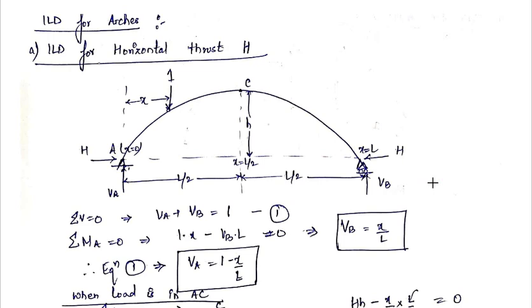In order to draw the ILD for the horizontal thrust, we first find out the values of the vertical reactions at A and B by applying all equilibrium equations. Summation of all vertical forces equal to 0 gives: VA plus VB equal to 1.